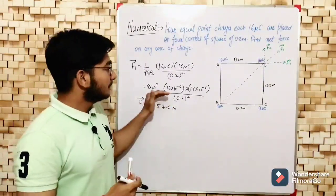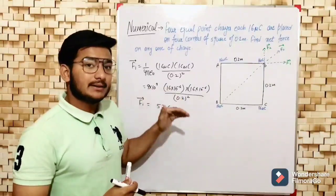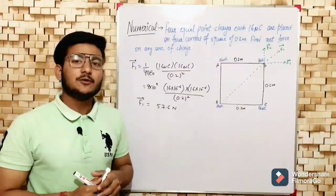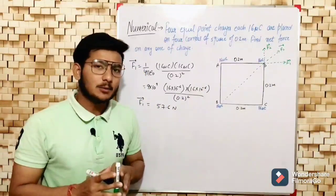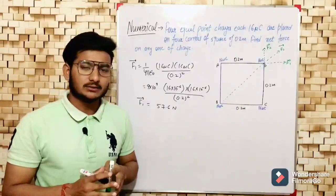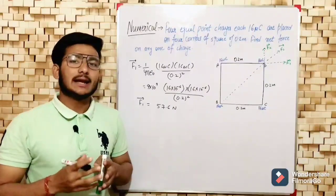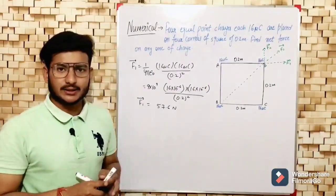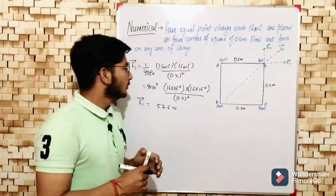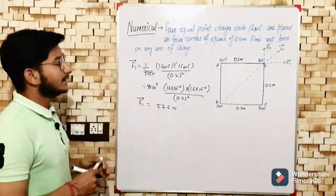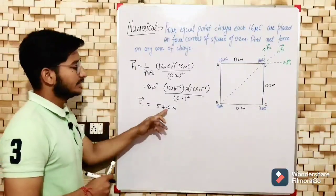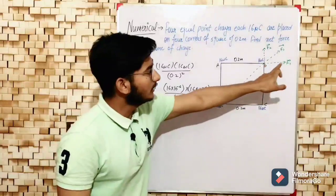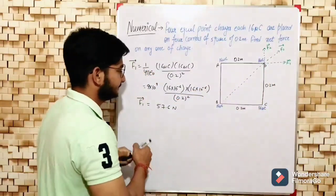I have solved this step by step in my handwritten notes, so if you face any problem in calculation, please check the notes slide at the end of the video. F1 has a value of 57.6 Newton and its direction is along AD.